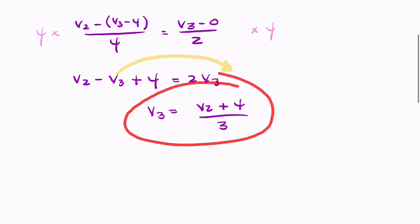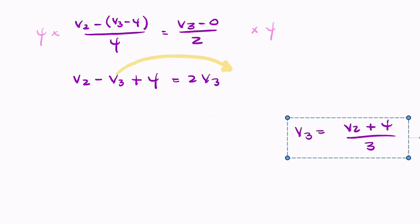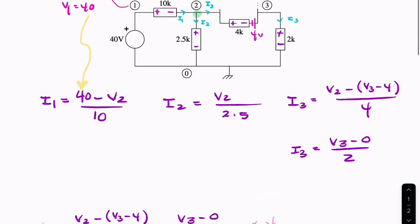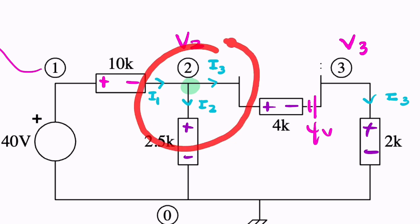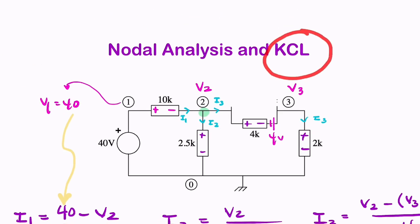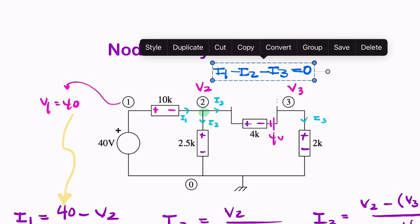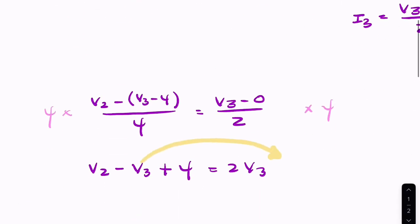So now we have an expression for V3. That effectively eliminates V3. So let's keep that aside, because we're going to need it. And let's go back to this junction here, and see if we can write an expression for Kirchhoff's current law. Kirchhoff's current law essentially says that the sum of the currents entering the node should be 0. So that looks like it means I1 minus I2 minus I3 equals 0.